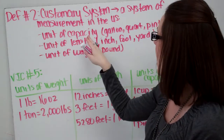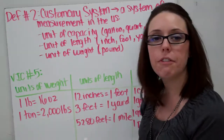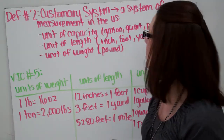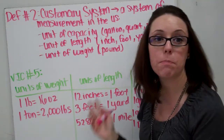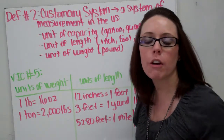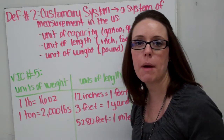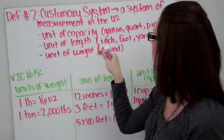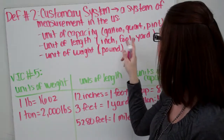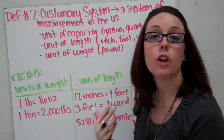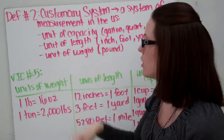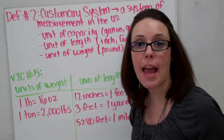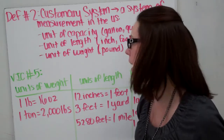Units of capacity — the different units of capacity we talk about are gallons, quarts, and pints. You hear all these when you're talking about cooking. Units of length are inch, foot, or yard. And unit of weight — we talk about pound or ton.